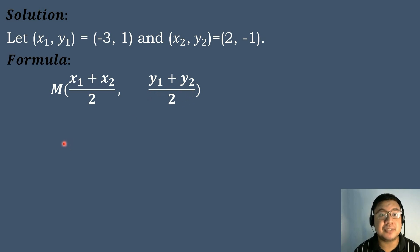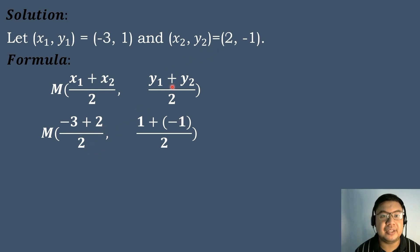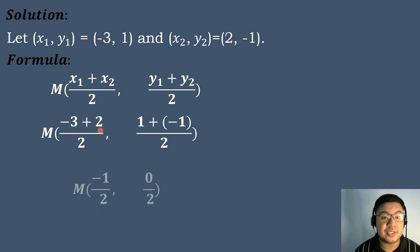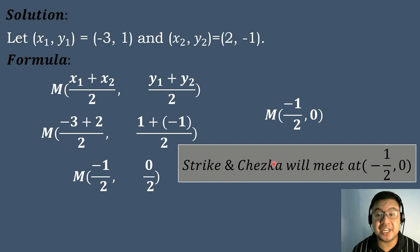And then after that, we will substitute the corresponding values. So the value of x sub 1 is equal to negative 3, plus the value of x sub 2 is equal to positive 2, divided by 2. And then the value of y sub 1 is equal to 1, plus the value of y sub 2 is equal to negative 1, divided by 2. And then we will simplify. Negative 3 plus 2 is equal to negative 1 over 2. And then 1 plus negative 1 is equal to 0 over 2. Bring down negative 1 half, and 0 divided by 2 equals 0. Therefore, Strike and Chesca will meet at the coordinates (negative 1/2, 0).